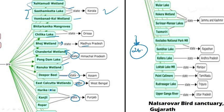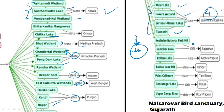Punjab has three Ramsar sites: Harike Lake, Kanjli, and Ropar. Jammu and Kashmir has the most, with four: Wular Lake, Hokersar Wetland, Surinsar-Mansar Lake, and Tsomoriri. Rajasthan has two: Keoladeo Ghana National Park and Sambhar Lake. Andhra Pradesh has Kolleru Lake, Manipur has Loktak Lake, and Tamil Nadu has Point Calimere and Sripur — that is, Rudrasagar Lake.